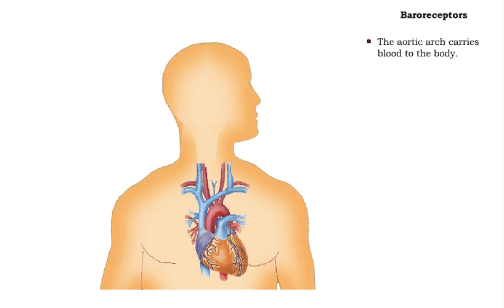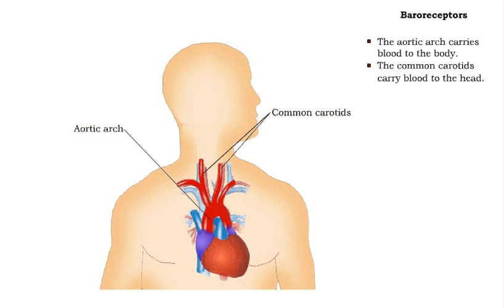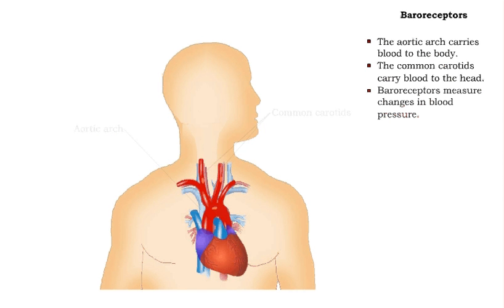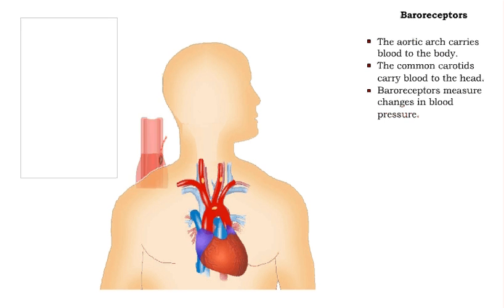The aortic arch and common carotids are arteries that supply blood to critical areas of the body. The aortic arch supplies the body and the common carotids supply the head. Within these major arteries are structures called baroreceptors that measure blood pressure and send nerve impulses up to the brain.